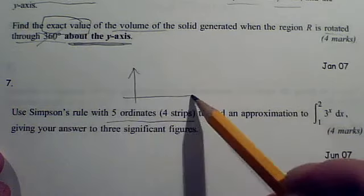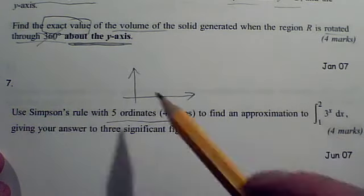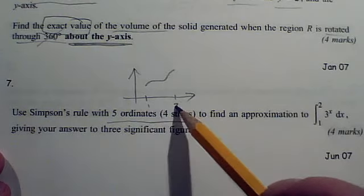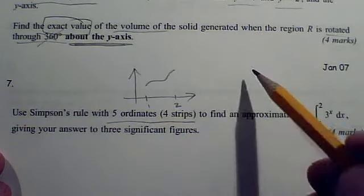You should know that graph, but even if you don't, it doesn't matter much. All you've got to do is draw any old squiggle between the values of one and two, and you show your four strips and work out your five ordinates.